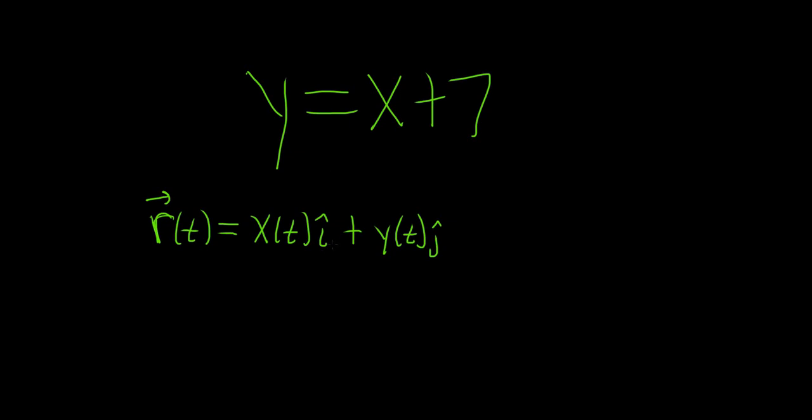Okay, so all we have to do is come up with x and y. Notice we can just let x be equal to t. And then in this case, y is equal to x plus 7, so simply t plus 7.